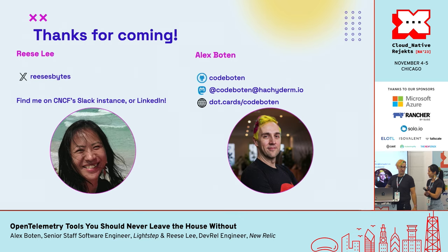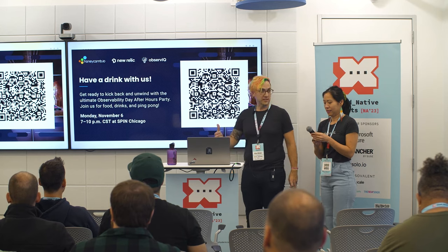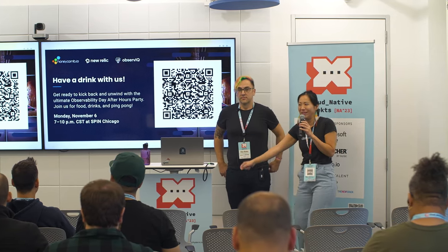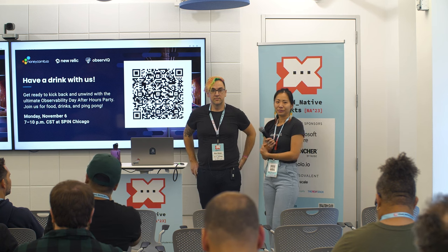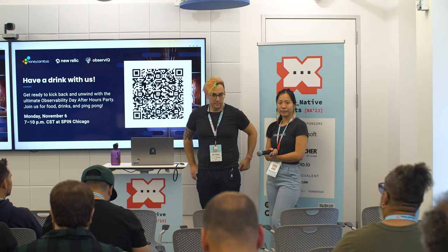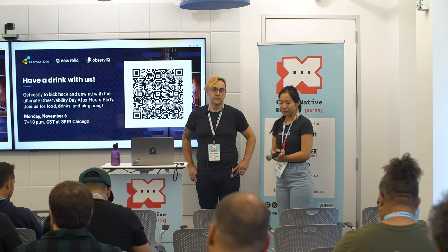I think that's all we have. I want to plug the observability party happening tomorrow — it says sold out online, but it's not, so we would love to see you there. We're ready for questions. Could you talk a bit about the relative merits of auto-instrumentation versus doing it by hand? I've heard stories of auto-instrumentation gone horribly wrong at great expense, and I'm wondering what the balance is between wanting to see something in a toy test environment versus having control over exactly what you're looking for in a production environment.